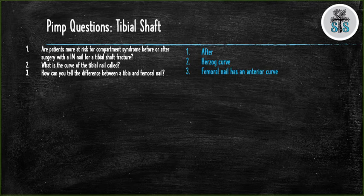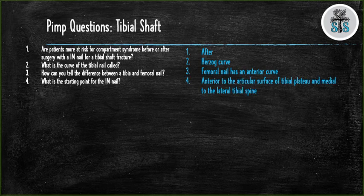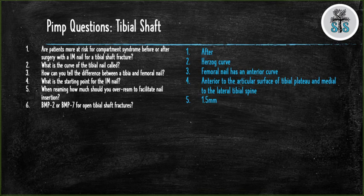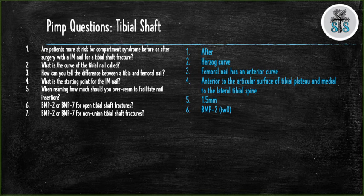Question 4: What is the starting point for the IM nail? Anterior to the articular surface of the tibial plateau and medial to the lateral tibial spine. Question 5: When reaming, how much should you over-ream to facilitate nail insertion? Question 6: BMP-2 or BMP-7 for open tibial shaft fractures? BMP-2. Question 7: BMP-2 or BMP-7 for nonunion tibial shaft fractures? BMP-7.